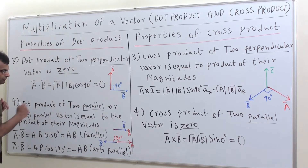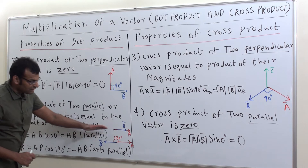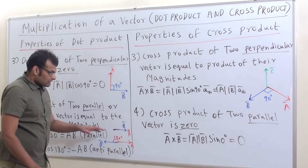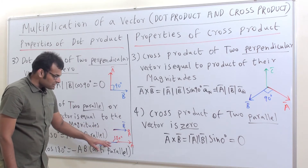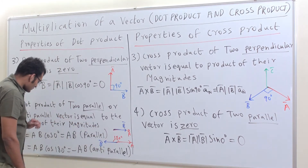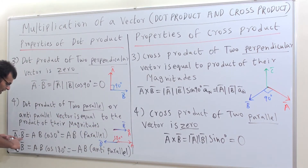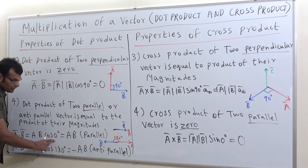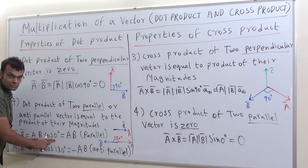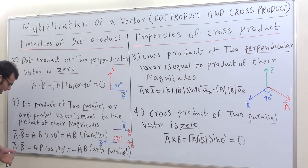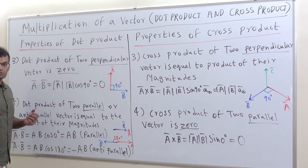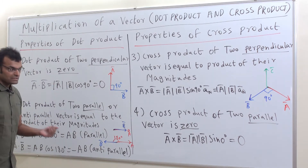Dot product of two parallel or anti-parallel vectors: for parallel vectors the angle is 0 degrees, so A bar dot B bar equals AB cos 0 equals AB. For anti-parallel vectors the angle is 180 degrees, so A bar dot B bar equals AB cos 180 degrees equals minus AB.